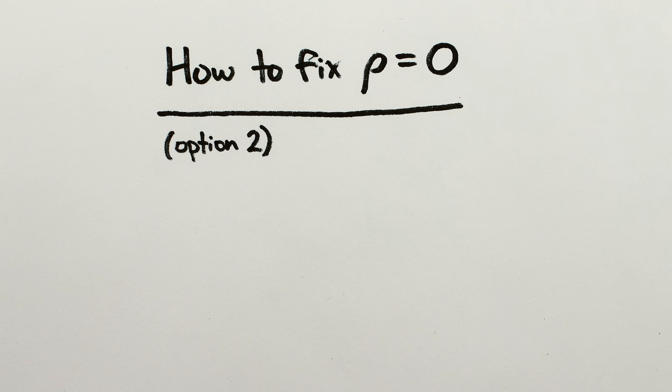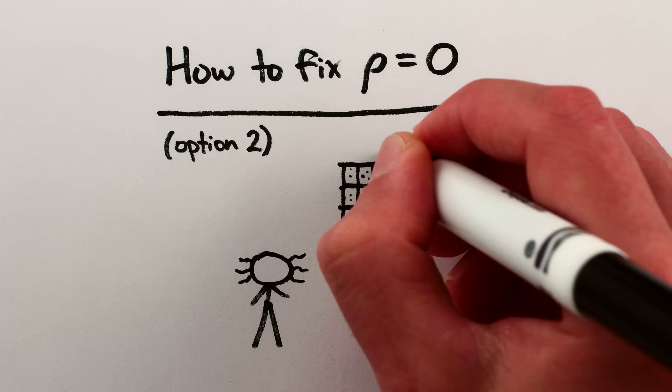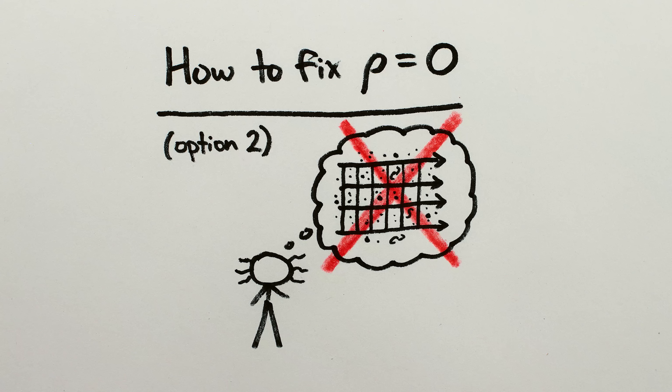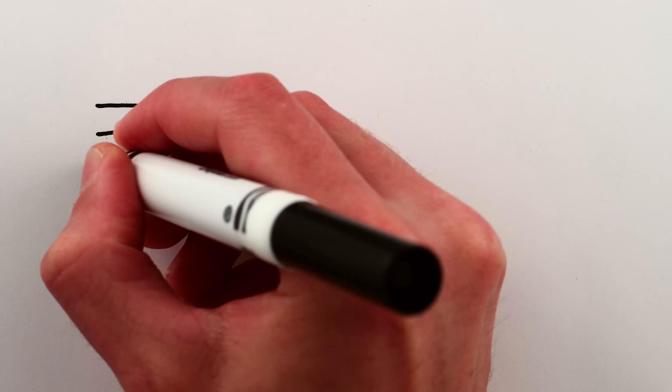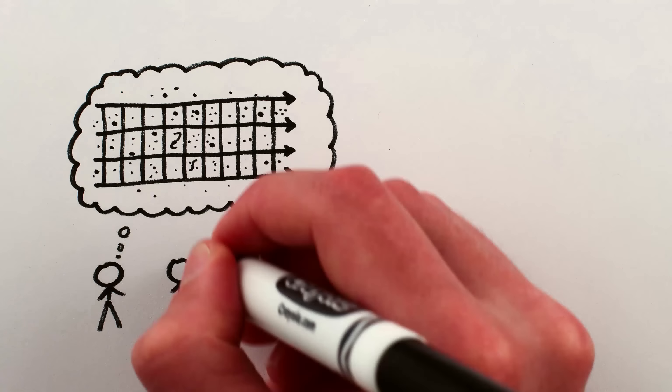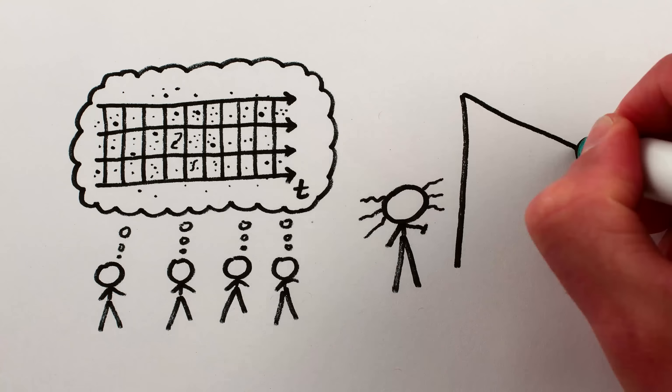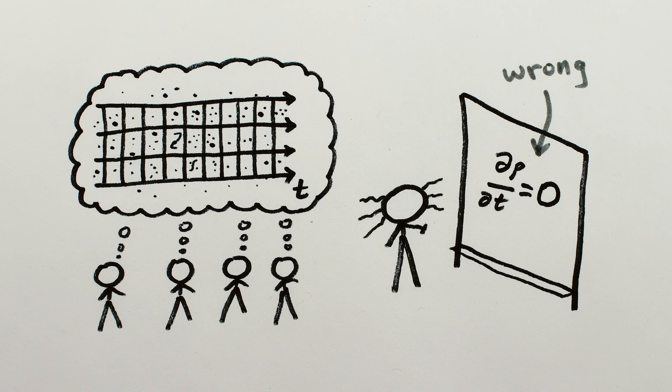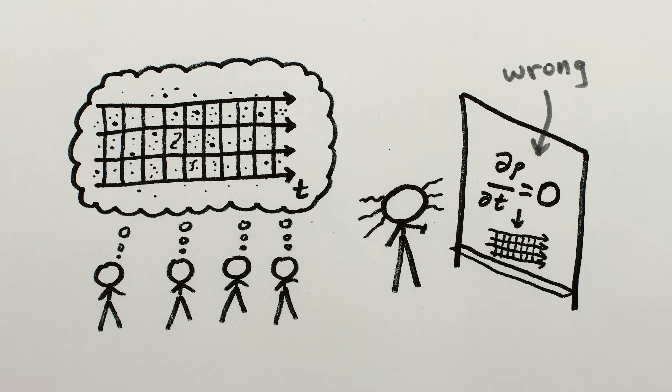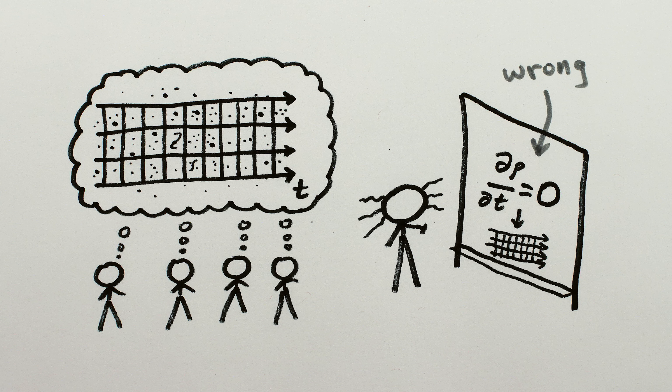The other solution to how the universe can have stuff in it was this. Don't assume, as Einstein had, that the universe is static and unchanging. The general understanding at the time was that the universe didn't expand or contract. And Einstein had also made a small but unfortunate technical error in his calculations, which appeared to prohibit the possibility of a changing universe. So it's not surprising that Einstein didn't see this solution.